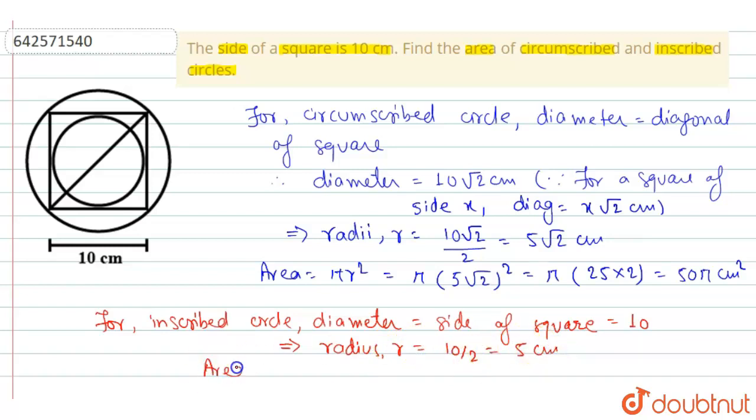So, from this we get area is equal to pi r square which will be equal to pi into 5 square which is equal to 25 pi cm square.